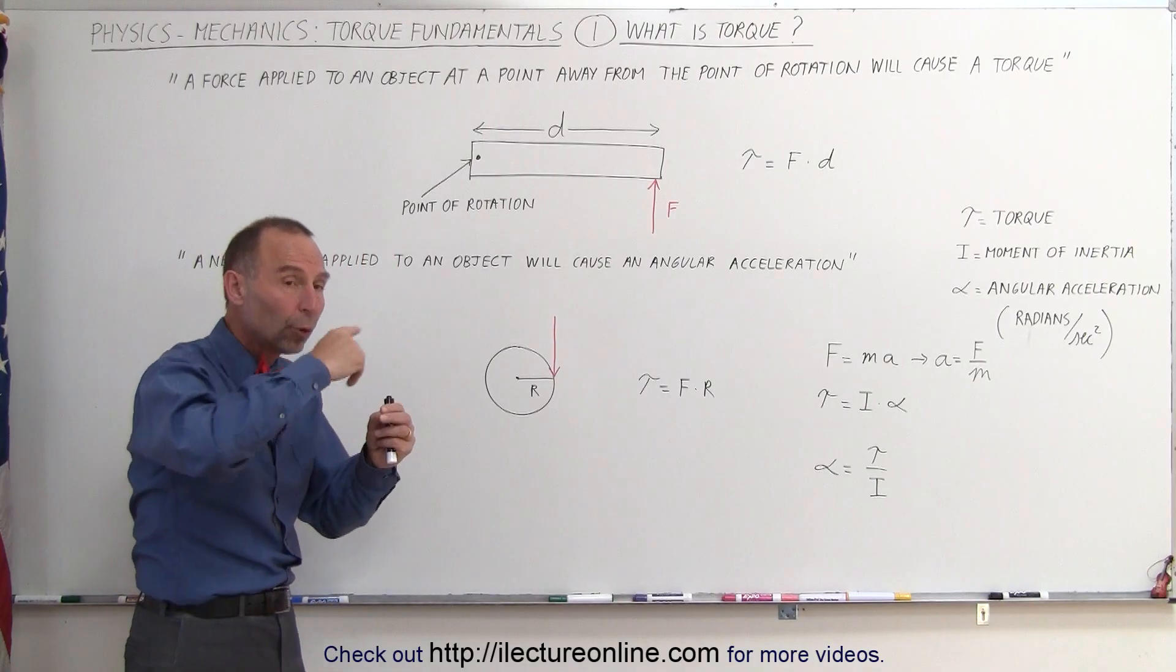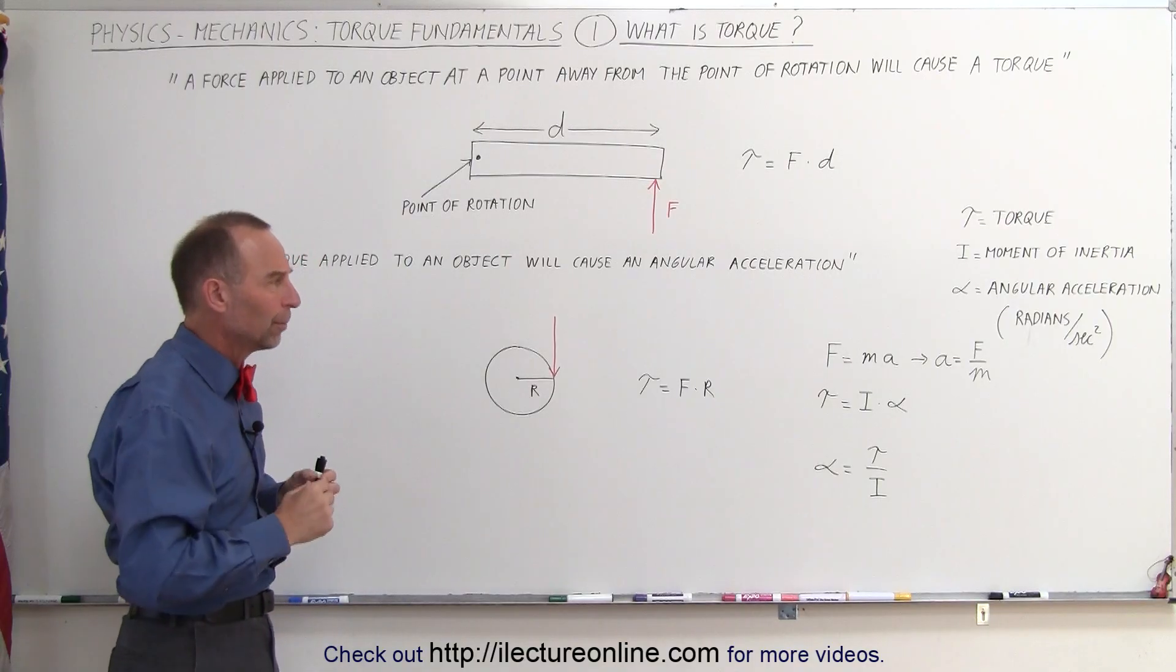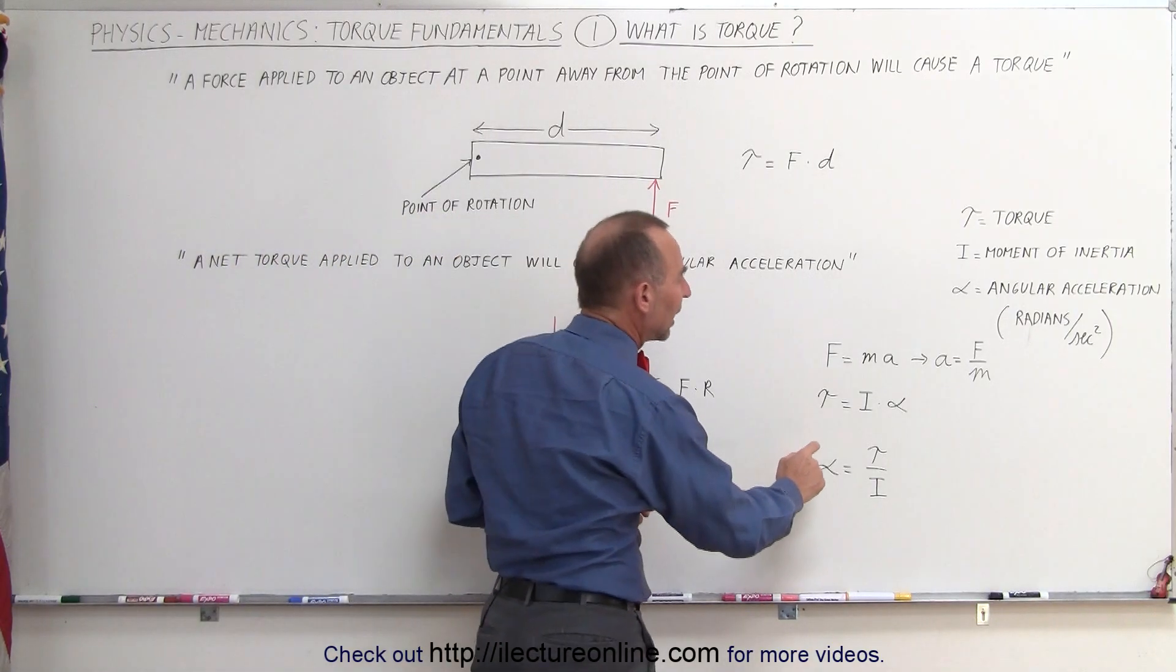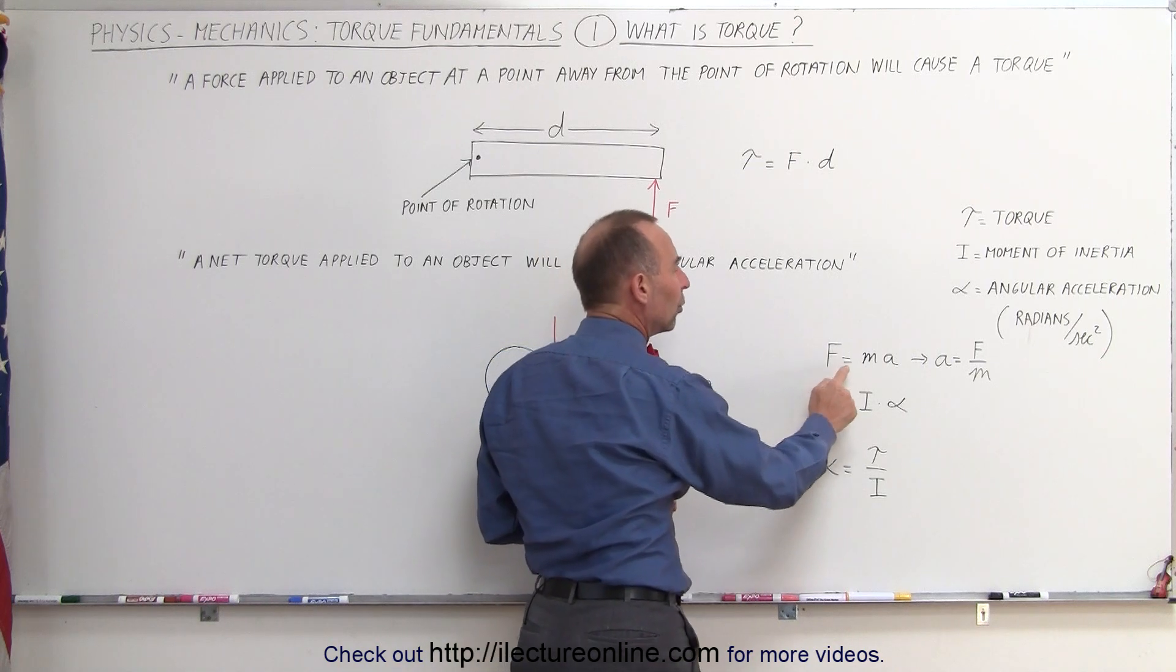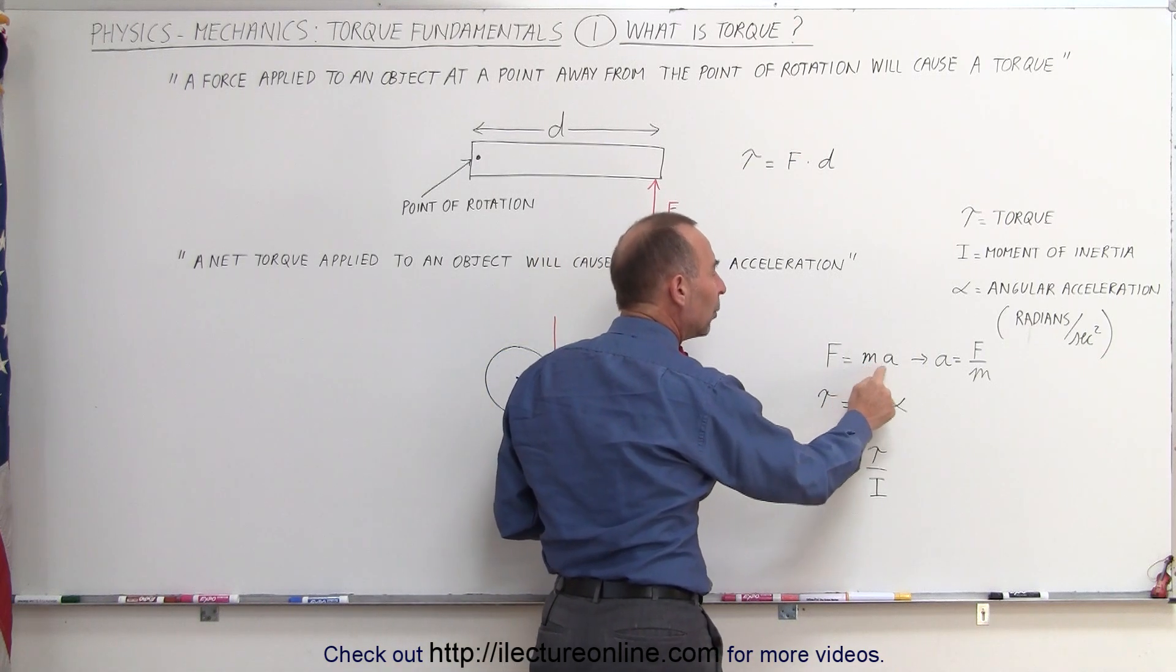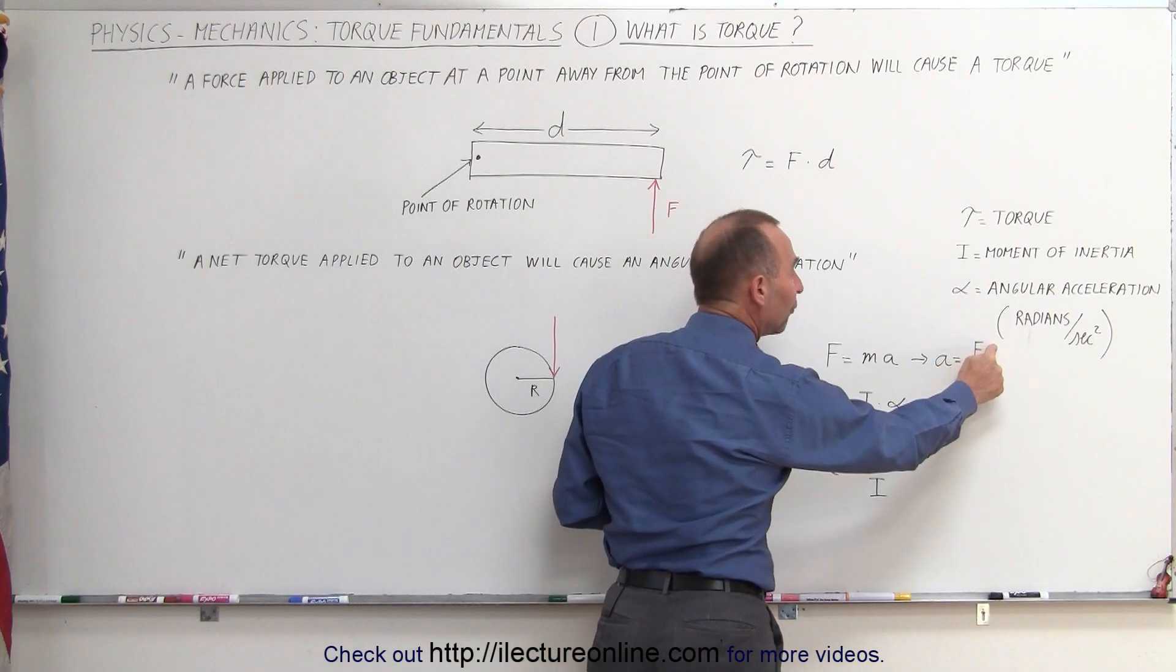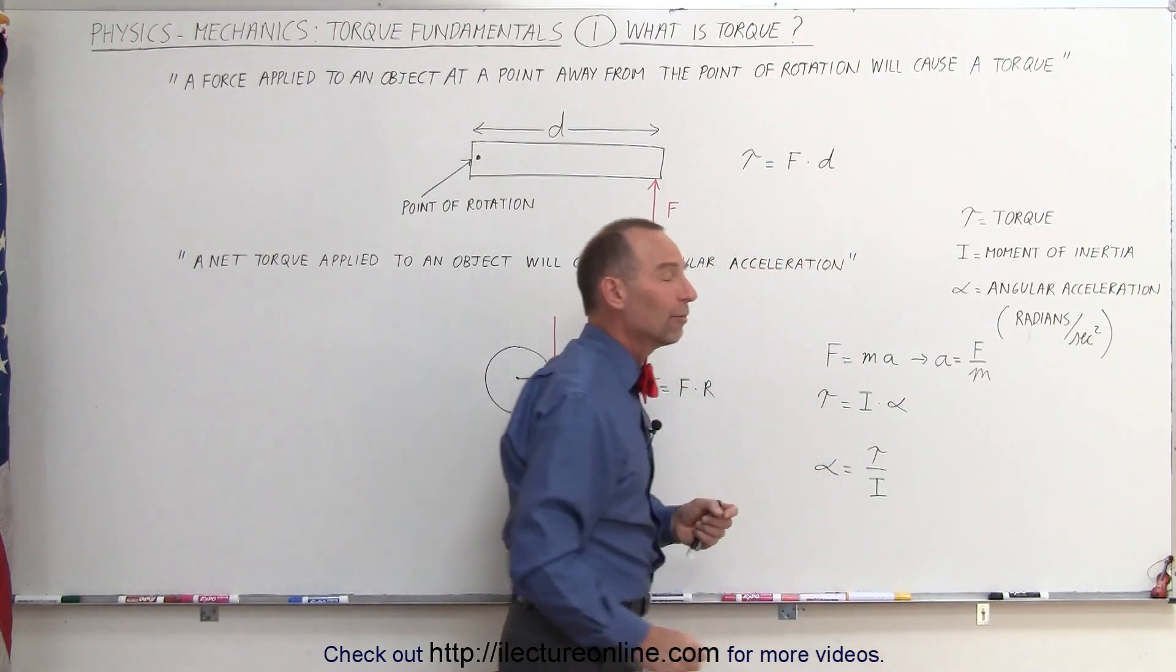In other words, it will cause the object to rotate faster and faster and faster. It's kind of analogous to the equation F equals ma. If we apply a force to an object that has mass m, it will cause an acceleration. The acceleration is simply the ratio of the force divided by the mass of the object.